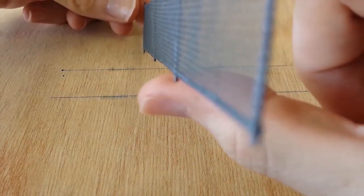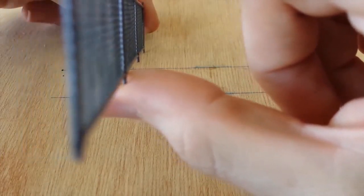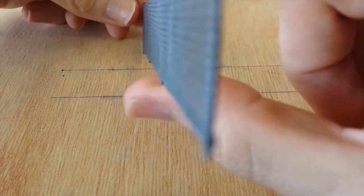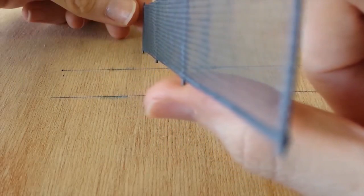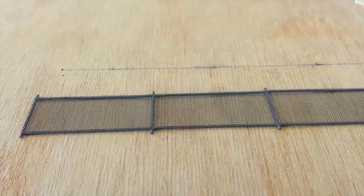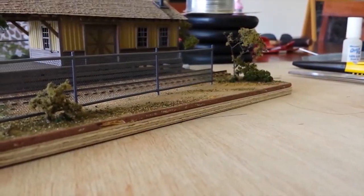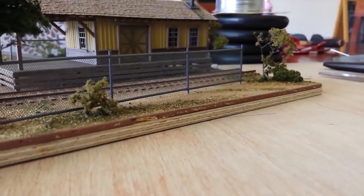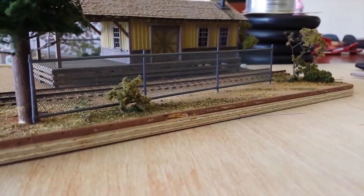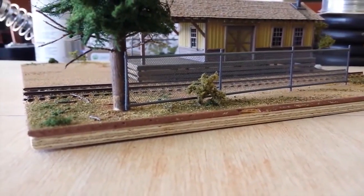By setting the line posts further apart than what would be prototypical we get an illusion of that fence looking a little more realistic and the materials blending into the scene a little better. When the line posts are close together it makes the whole fence look a little bit oversized but it's totally up to you how far you space the posts. You can experiment and see what you like best.